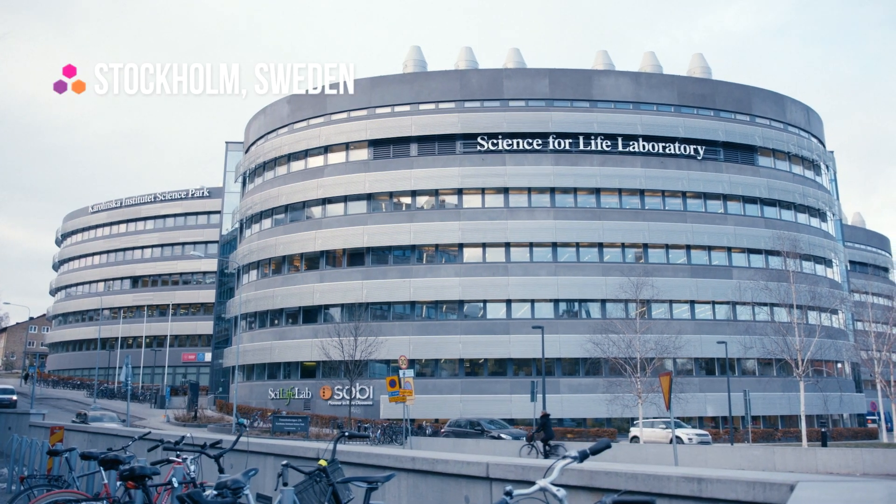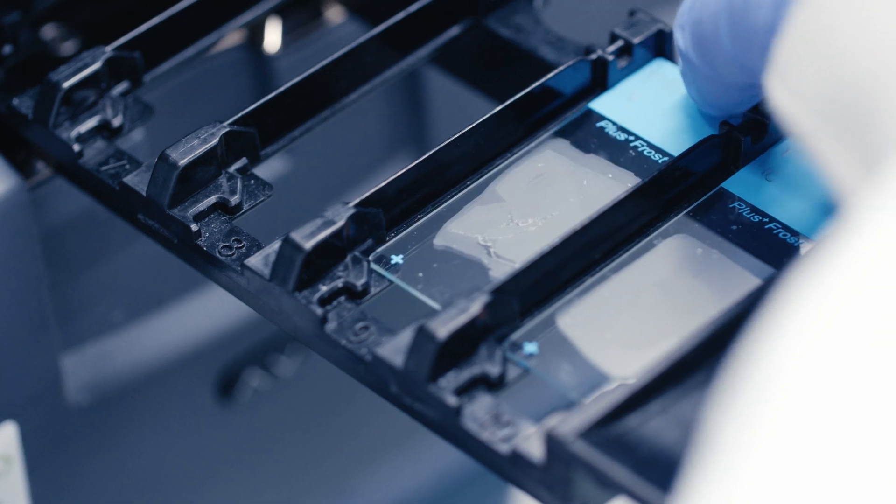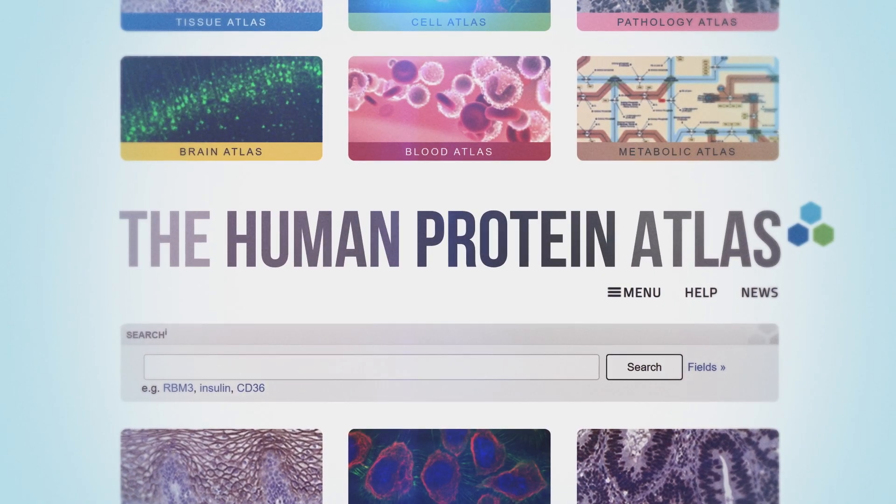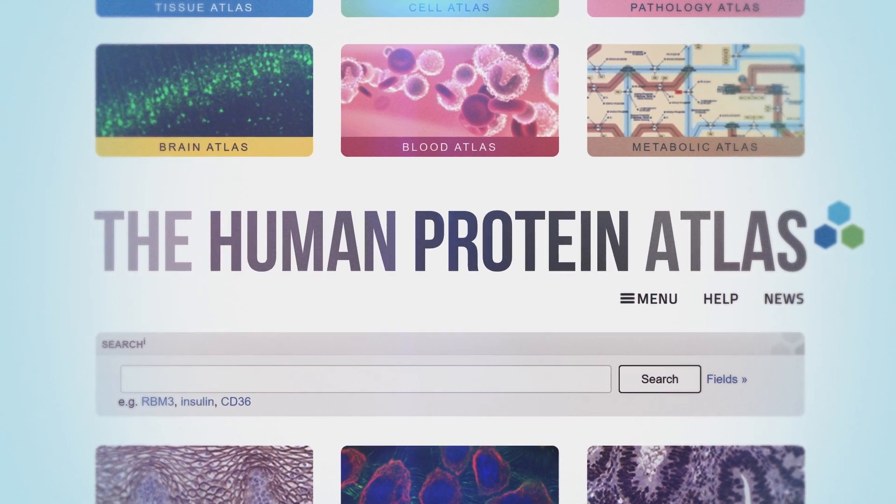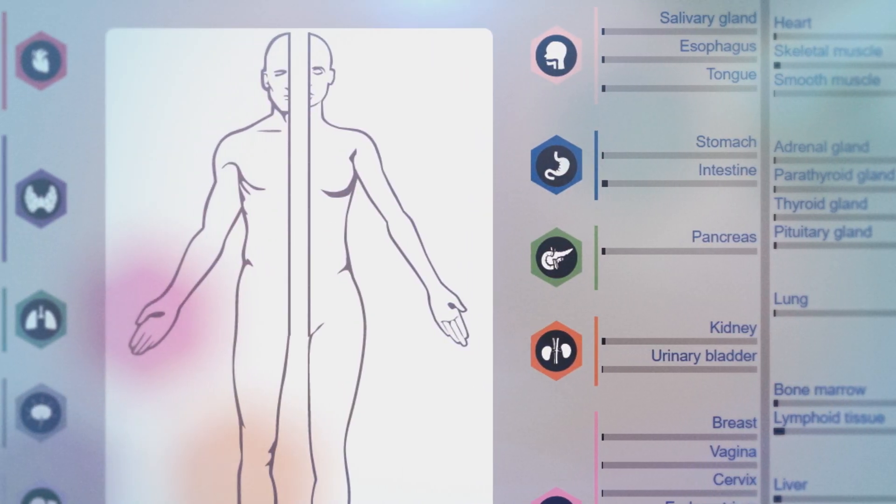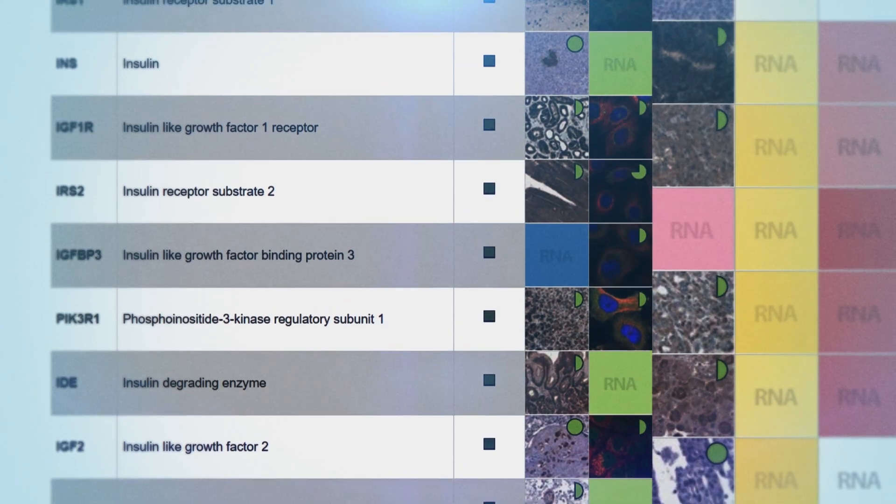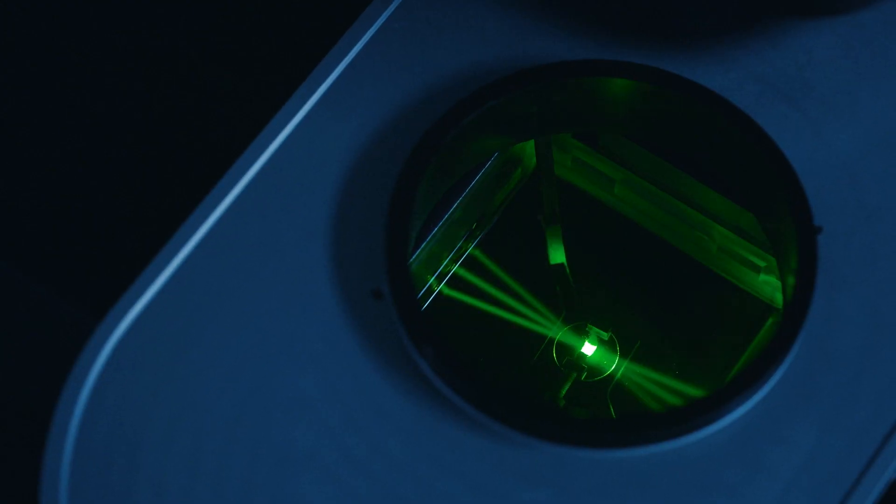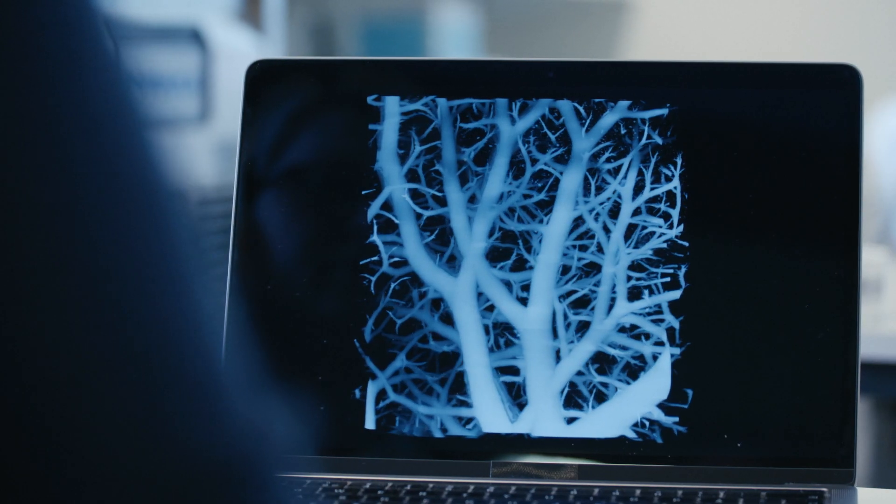Within the Human Protein Atlas project, all of the different proteins in the human body are being mapped out. On the HPA open access website, researchers can study the proteins present in our livers. This is now being taken to a new level where researchers can examine our proteins in 3D.